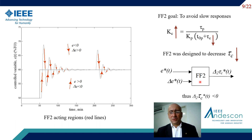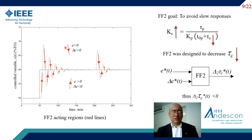FF2 was designed to avoid slow responses by decreasing the closed-loop time constant. Red lines represent the regions where FF2 acts. There, the error signal and its change have different signs, above and below the set-point.